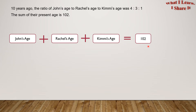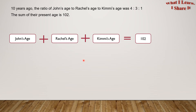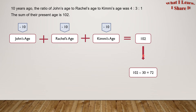So 10 years ago, each of them would have been 10 years younger. So the total would be lesser by 30 years. So 102 minus 30 equals 72.